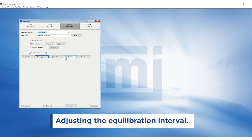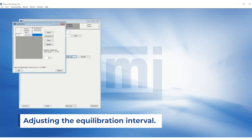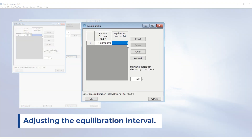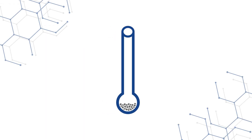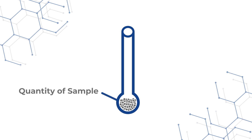Adjusting the equilibration interval can also optimize the speed of the analysis. However, if the sample naturally takes long to equilibrate, it can significantly compromise the data. Lastly, as mentioned in tip number two, the quantity of the sample can also be adjusted to optimize the speed.